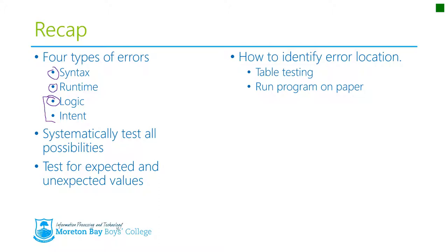You need to be able to test for all the expected and unexpected values. So you've got to allow for the fact that people might be not highly intelligent or not understand what they're supposed to be putting in and will put in the wrong answers. So how do we do that? How do we identify an error location?